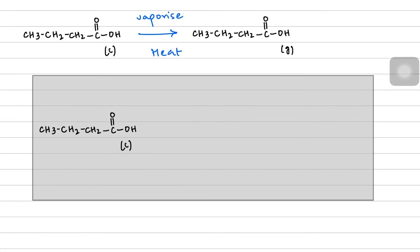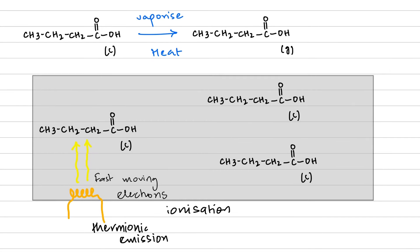The vapors of the compound are then subjected to a phenomena known as ionization. What happens in ionization is that we take a tungsten filament or any sort of filament which follows the principle of thermionic emission. We heat this metallic wire and this wire will later emit fast moving electrons.